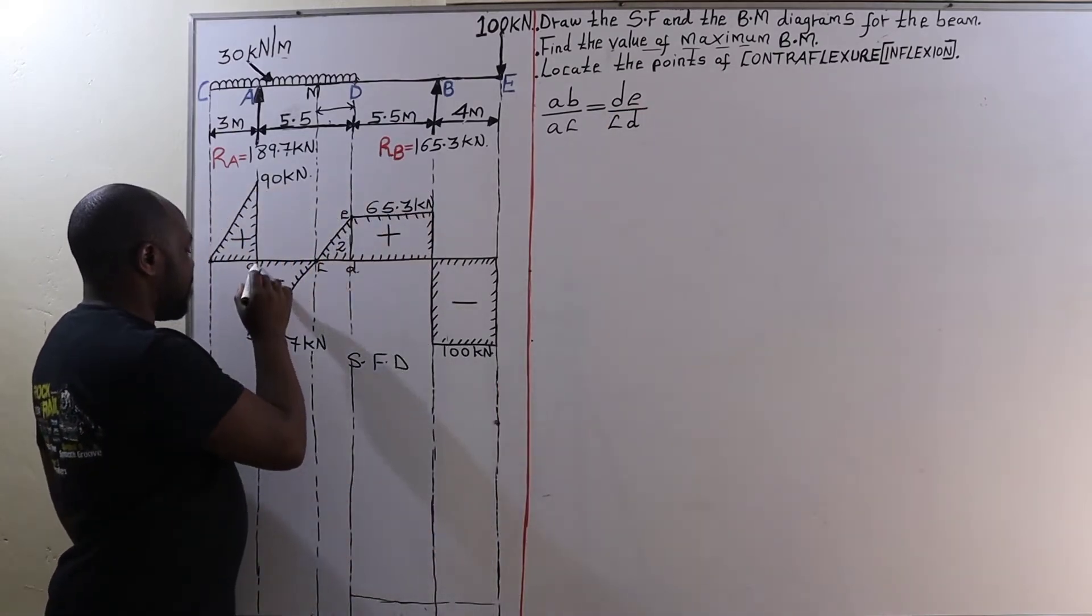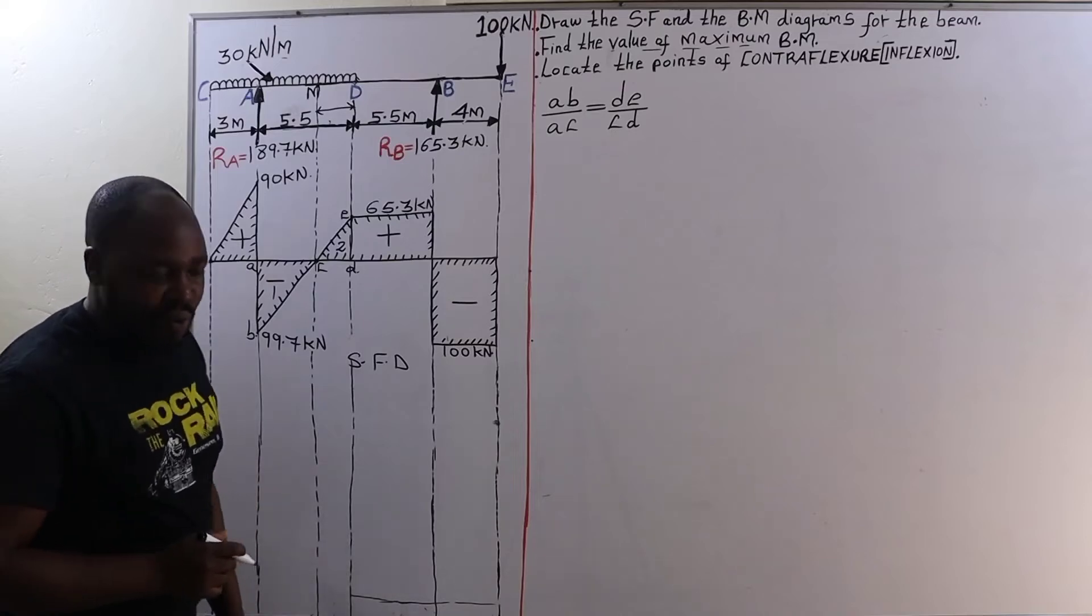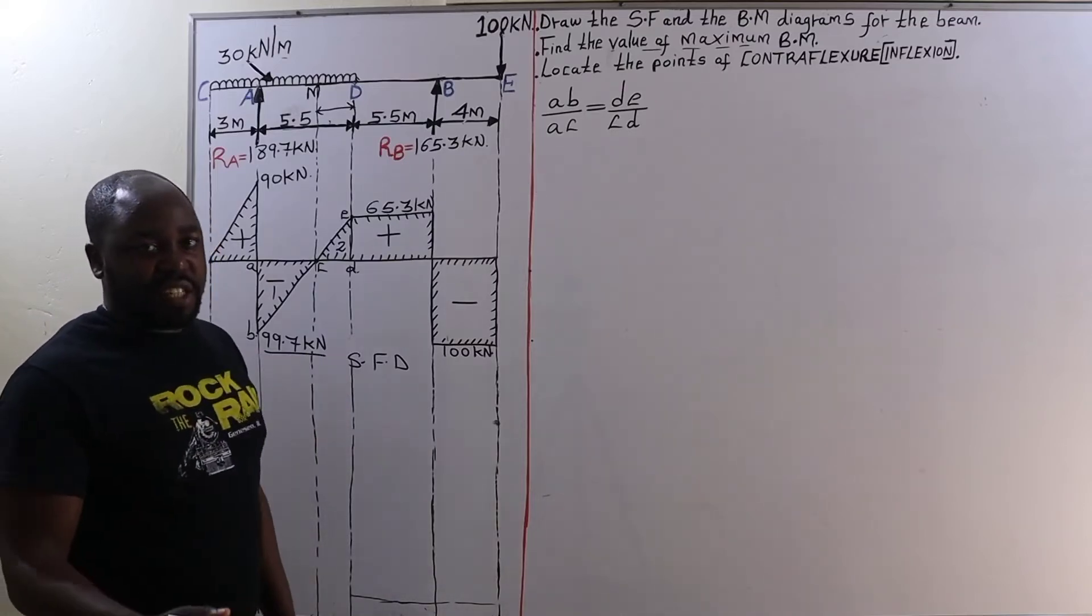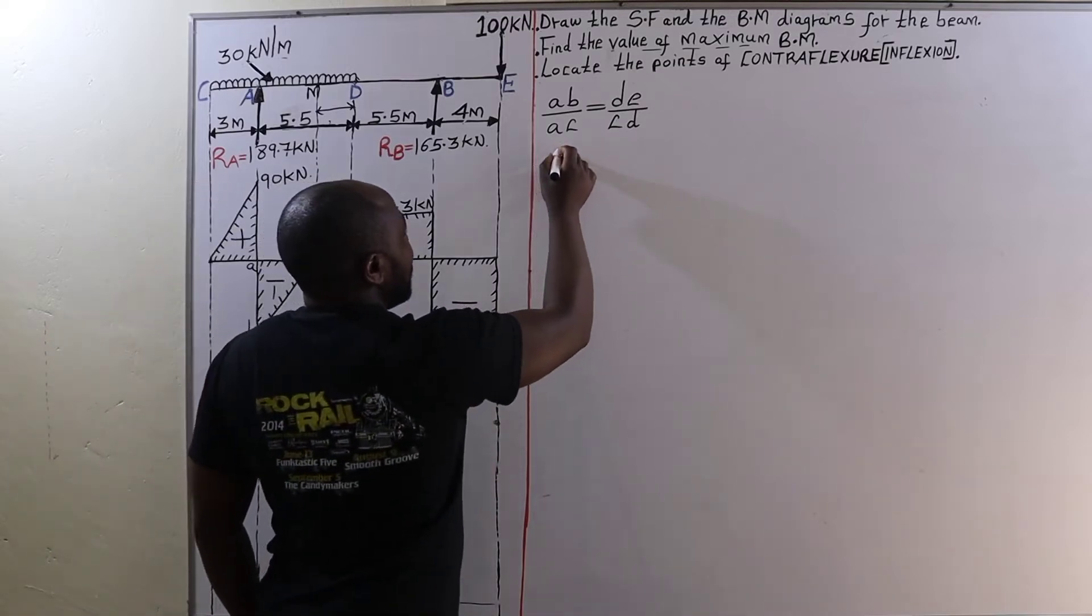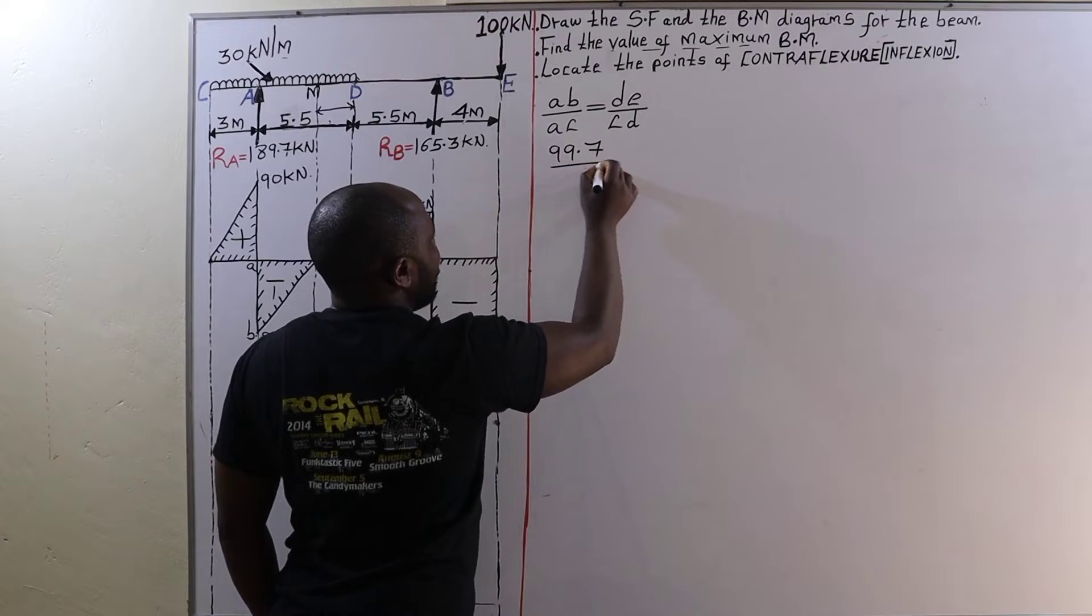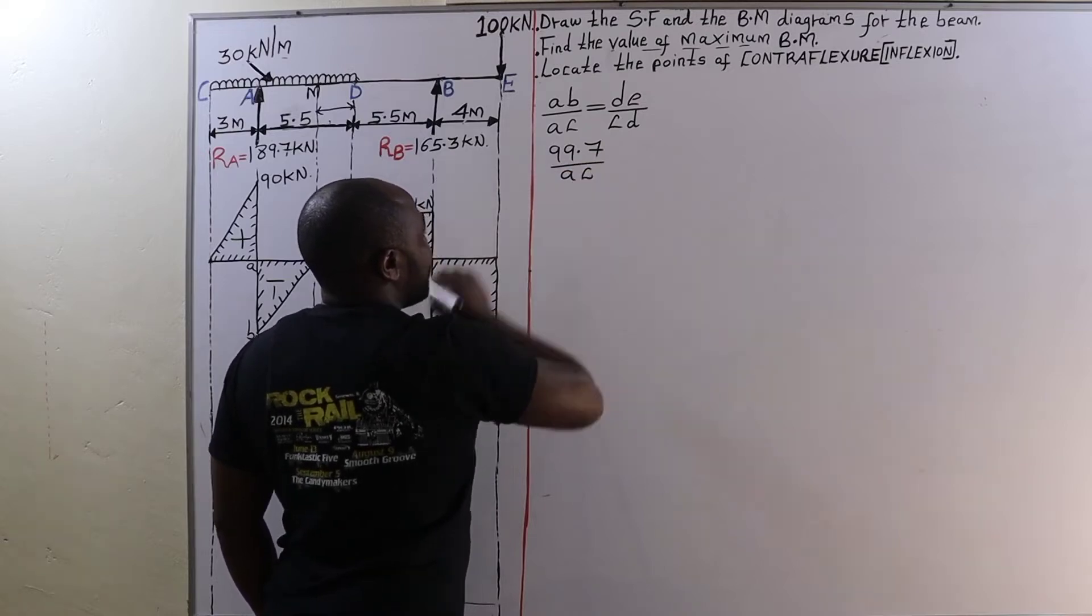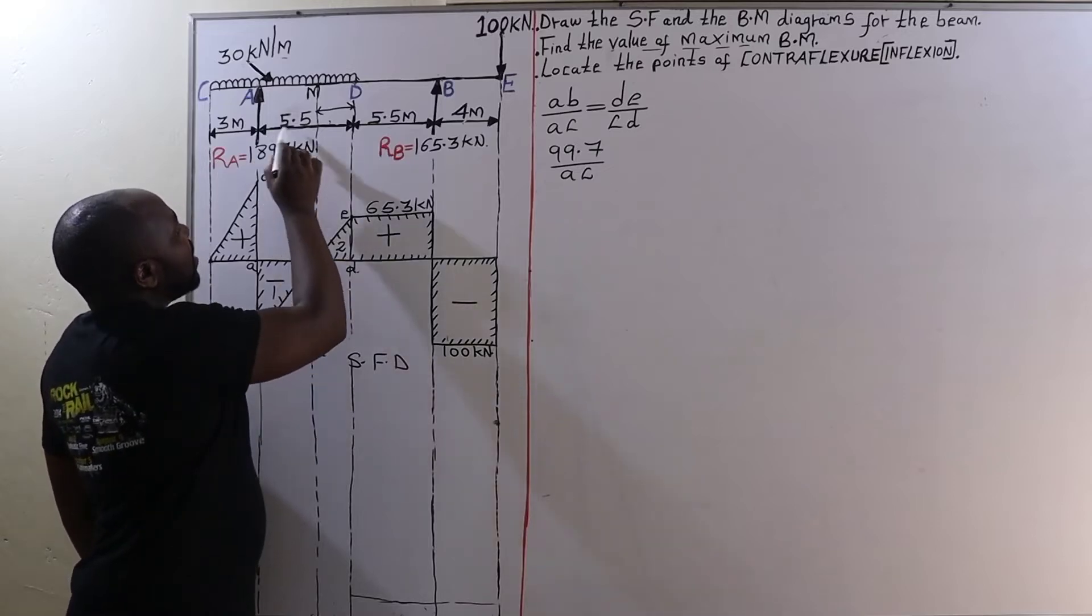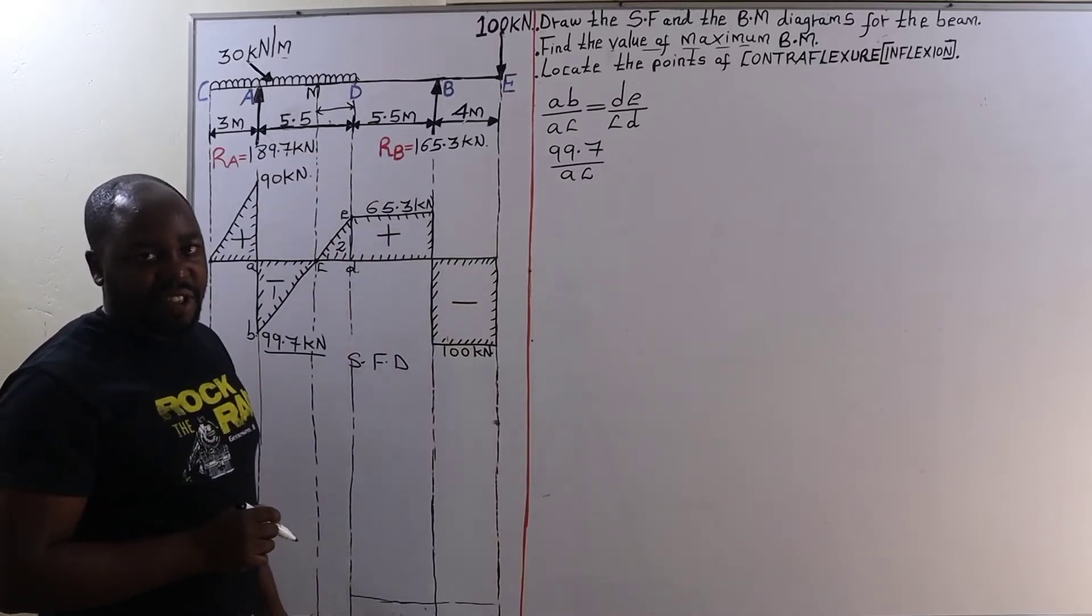Do I know the distance from A to B? Yes. How? It is 99.7 units. Therefore A to B is 99.7 units all over A to C, which I don't know its distance.